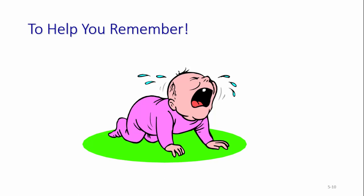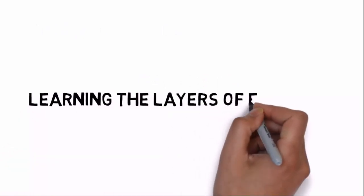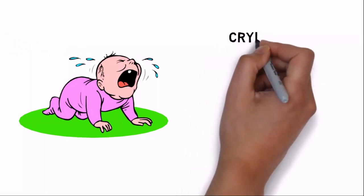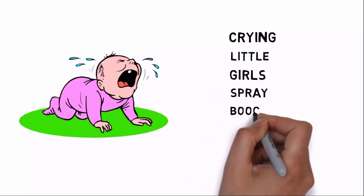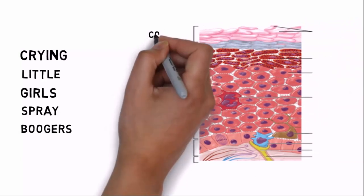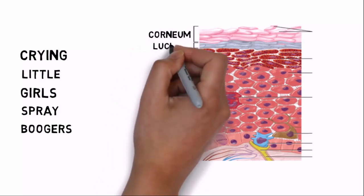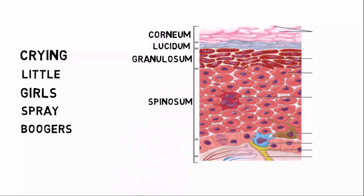Here's a fun way of learning the layers of the epidermis as found in thick skin. The mnemonic is: 'Crying Little Girls Spray Boogers.' C stands for corneum, L for lucidum, G for granulosum, S for spinosum, and B for basale.